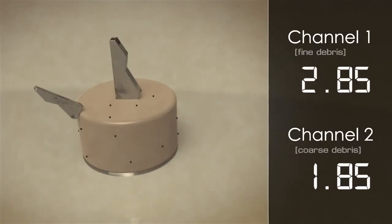The sensor has two independent analog output channels. The first channel, referred to as the fine channel, is configured to measure the build-up of fine metallic debris, typical of normal engine or transmission wear.